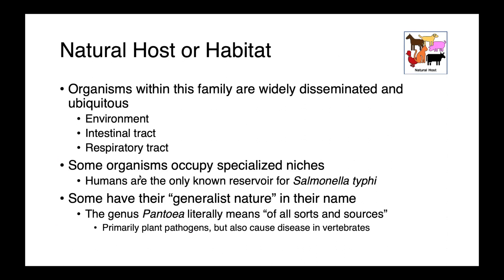They're found in the environment, in the intestinal tract, and in the respiratory tract. Some of them occupy very specialized ecological niches — so Salmonella typhi, for instance, is only known to colonize humans; we are the only reservoir. While others have a very generalist nature — so Pantoia, which literally means 'of all sorts and sources,' is primarily a plant pathogen but also causes diseases in vertebrates, including metritis in horses.